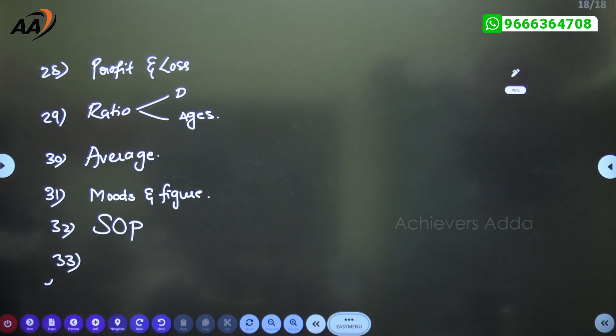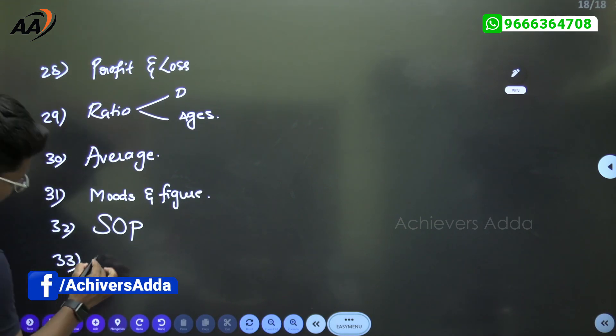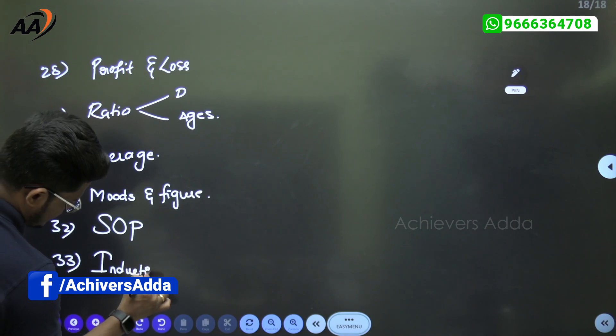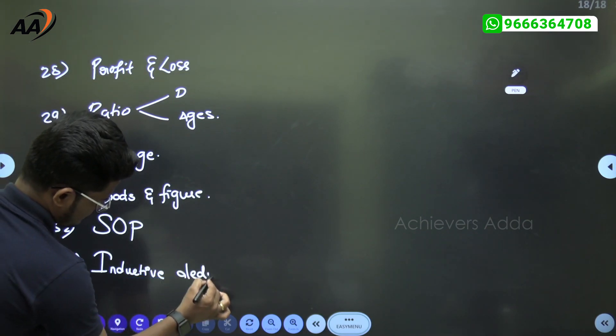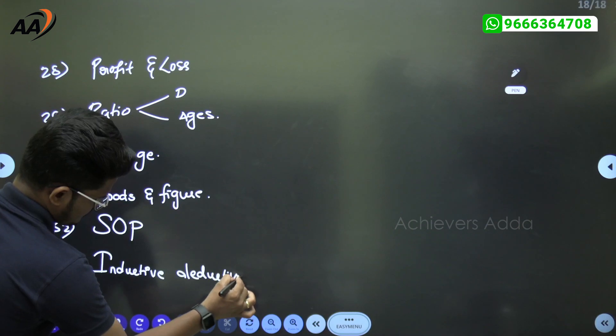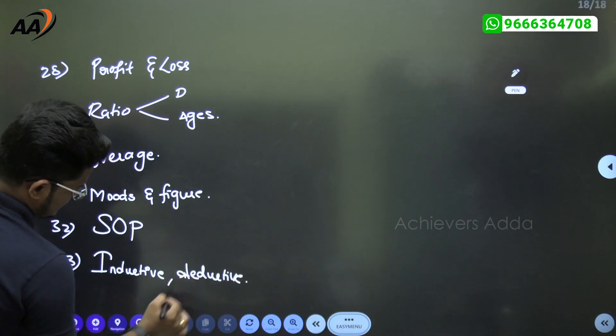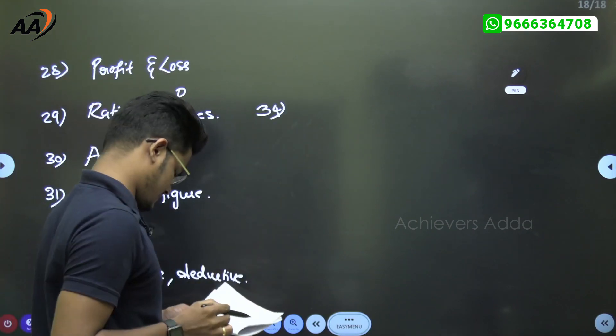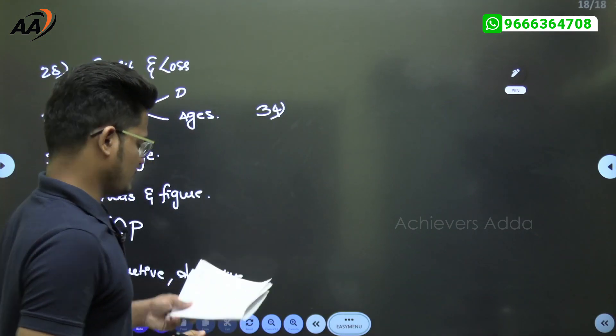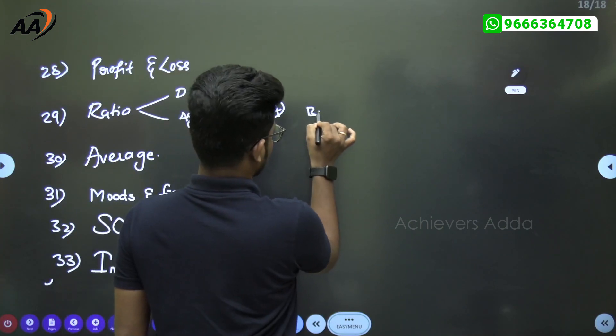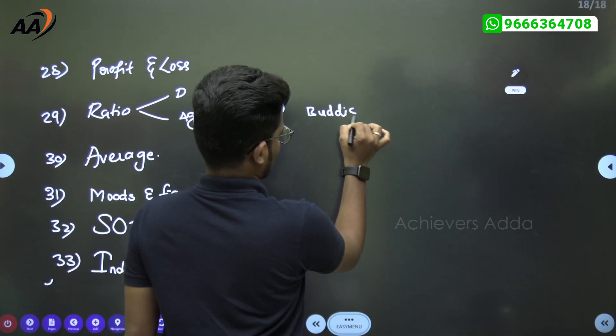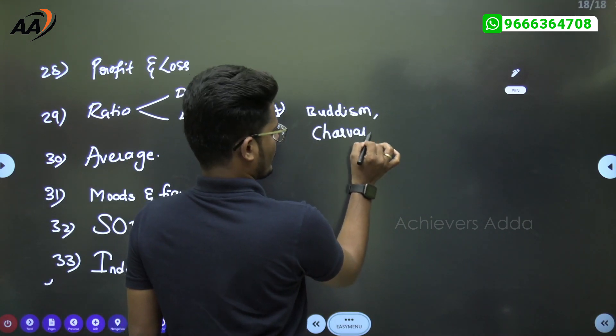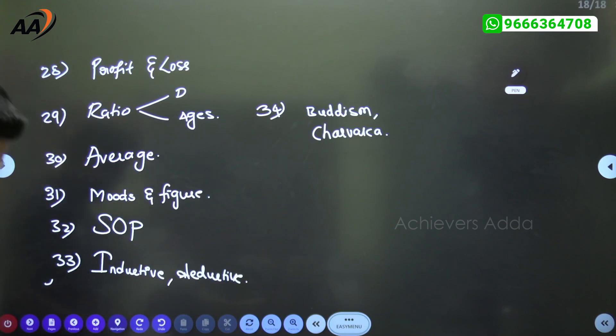Next question is 33, which is inductive deductive related. Inductive deductive reasoning question. Next, Buddhism, Charvaka - match the following is given. Either match the following or some philosophy related question is there.